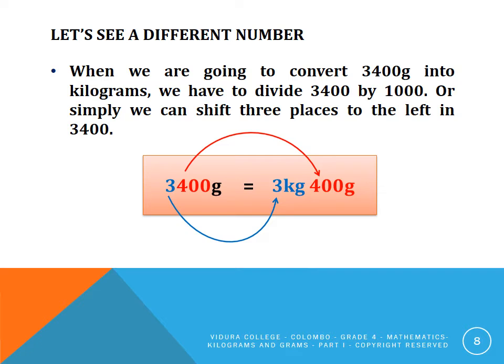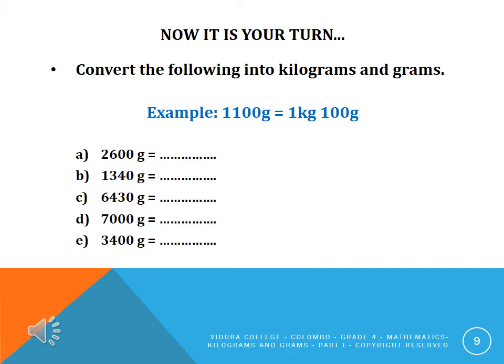Let's look at a different type of number. When converting three thousand four hundred grams into kilograms, we divide three thousand four hundred by one thousand. Or, simply, we can shift three places to the left in three thousand four hundred. When converting grams into kilograms, we shift three places to the left.